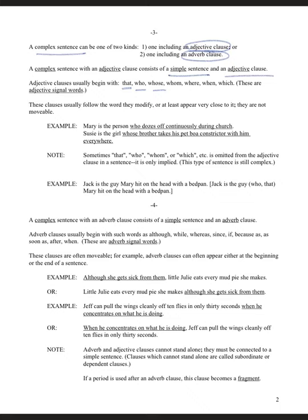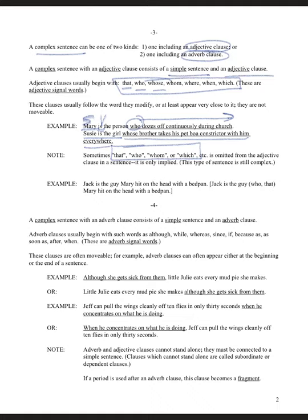In the example, Mary is the subject and 'is' is the verb — Mary is the person who dozes off continuously during church. 'Who' is one of those adjective signal words indicating an adjective clause. Another example: Susie is the girl whose brother takes his pet. Most students don't have trouble with this format. Notice there are no commas in these examples because you don't need them.